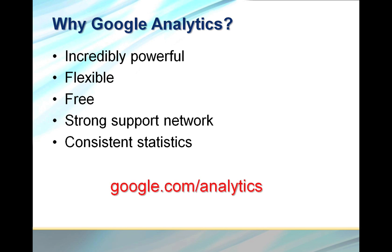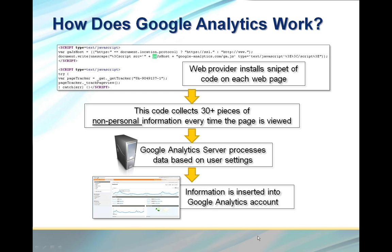To start out so everybody understands how Google Analytics works: your web provider will place a very small snippet of code on your site — right here. It is completely unimportant that you understand this code, but it goes on every page of your site. When somebody goes to a particular page, this code records 30-plus pieces of information about them and forwards that to the Google Analytics servers. The servers process the information and put it in your analytics account. This happens several times a day, so analytics are not real time — they are comprehensive to the day.